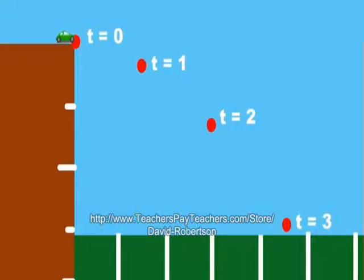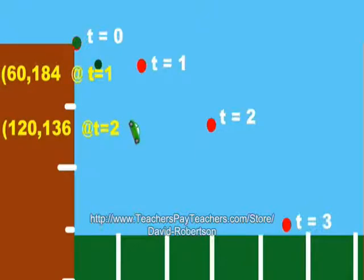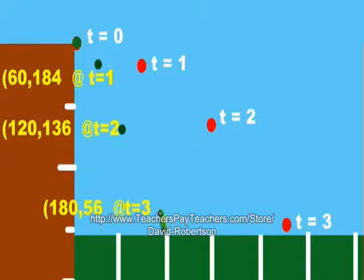Now you'll look at the Volkswagen Beetle. You'll notice that at t equals zero, you were at the exact same place. At t equals one, vertically, you're at the same place you were in the Ferrari, but horizontally, it had only traveled 60 feet. Here it is again at t equals two, and t equals three.